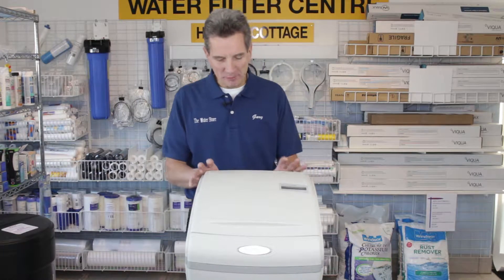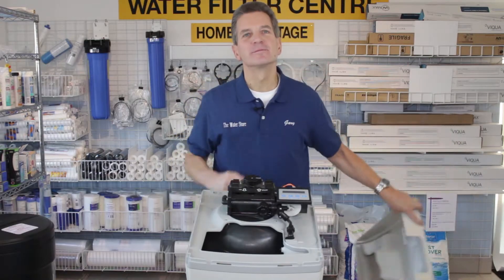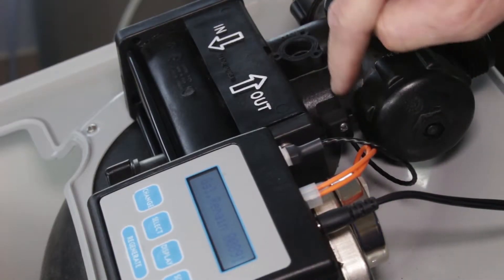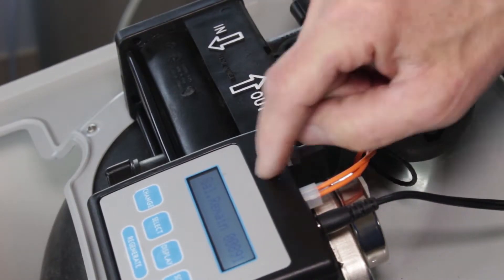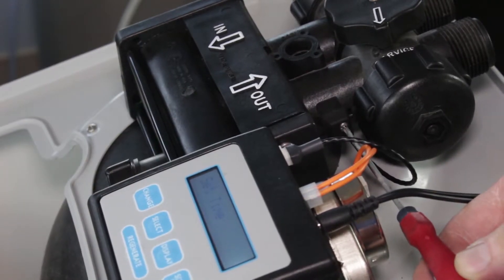So the first step is removing the lid. You just grab it at the back and lift up like so. The flow sensor is right inside here and connects to the controller right there. So all you need to do is just grab a small Phillips screwdriver.